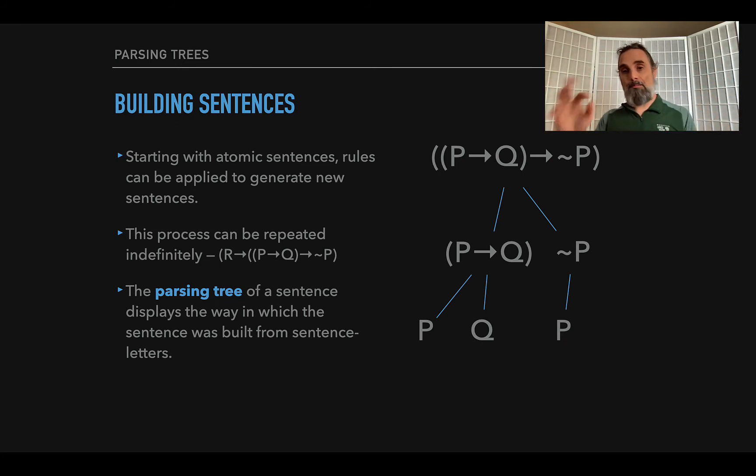You know, the thing at the top has two parts, the P or Q and the not P. And then the not P has one part, as far as sentences go, the P. And the P or Q has two sentences inside of it, the P and the Q. So the parsing tree shows how a sentence is built up or broken down into the sentences out of which it's made, where we are getting rid of the logical vocabulary and the parts are just the sentences.